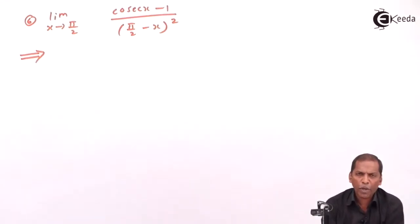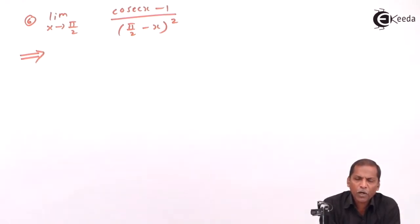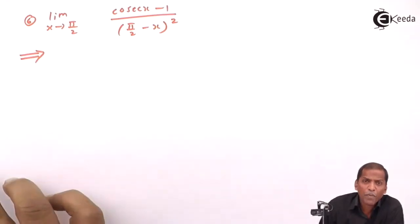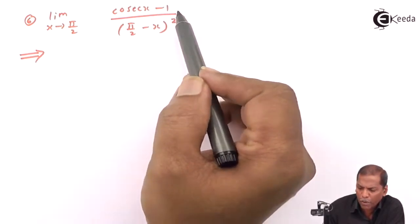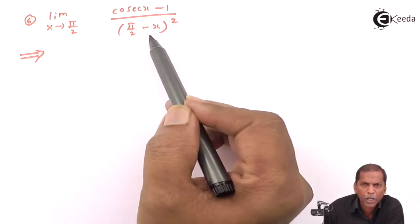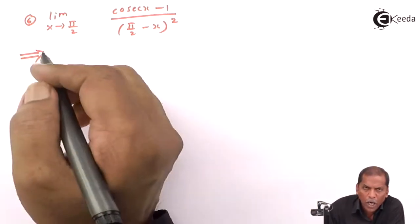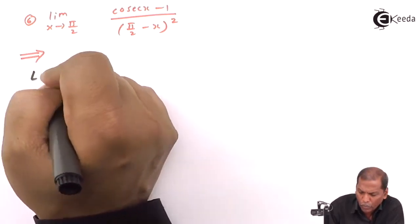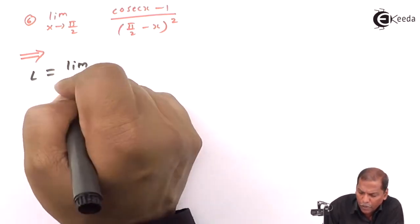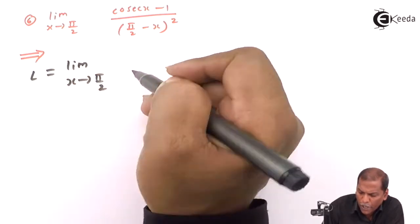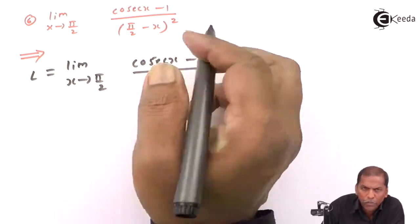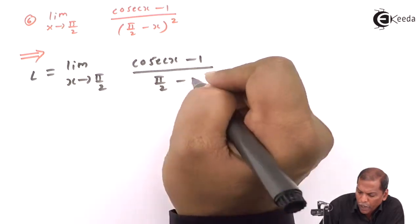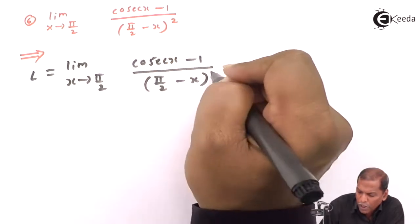Hello friends. Now we see problem number six, which is based on the substitution method of the chapter on limits. The problem is: limit as x tends to π/2 of (cosec x - 1) divided by (π/2 - x) whole square.